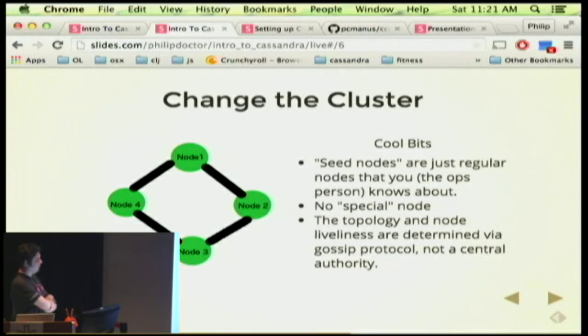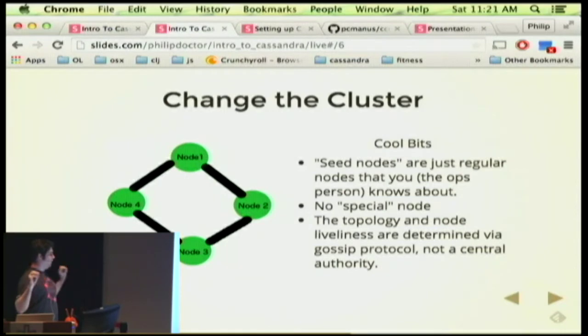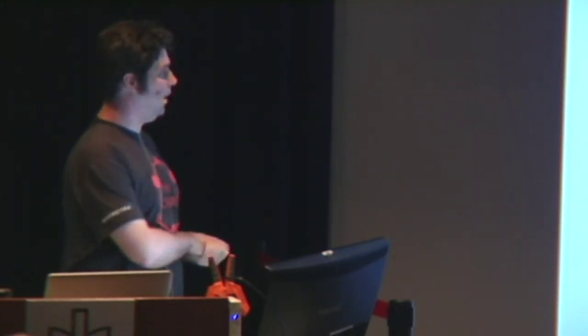We don't need an orchestrator or coordinator or special node to bring node 4 into the cluster. We just needed a seed node, which is any node. The topology liveliness information is shared by a gossip protocol — these nodes are actually gossiping among each other to determine who else is on the ring the whole time. There's no central authority or big broadcast going out to talk about node state.